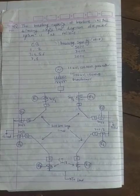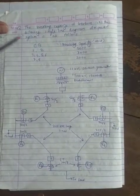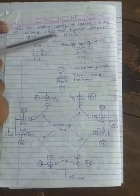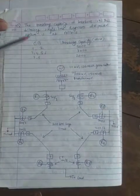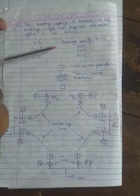And in the question the data is given for the circuit breakers. They have the capacities like 1 and 2 has a breaking capacity of 5000 MW. 3, 4, 5 and 6 have 3000 MW. 7 and 8 have 2000 MW.